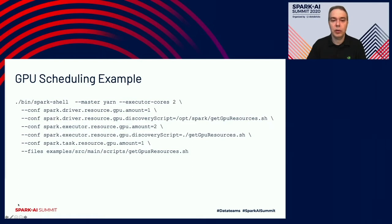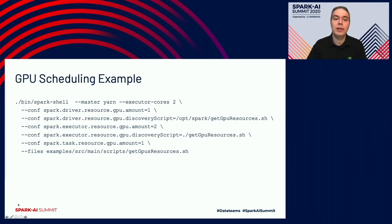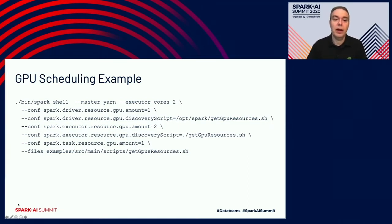Correspondingly, we can specify a GPU discovery script for the executors. We can also specify the task resource GPU amount, meaning we want every task to use one GPU. With this configuration, we are expecting no more than two tasks to run at one time on an executor, because each task is going to use one GPU and each executor will have at most two GPUs.